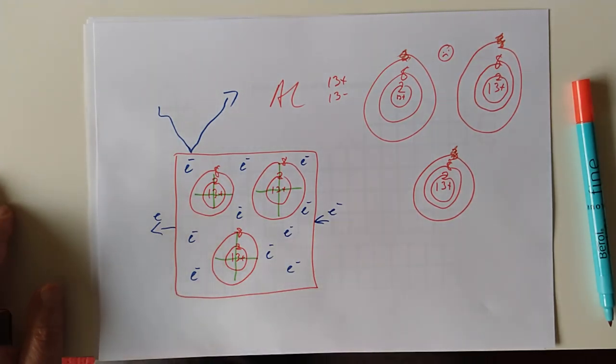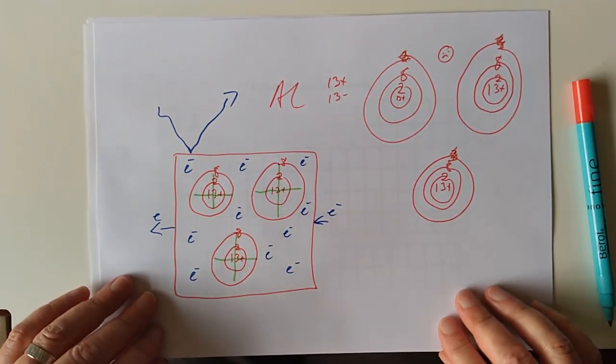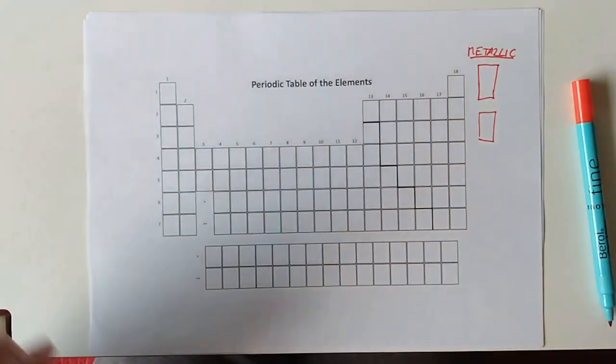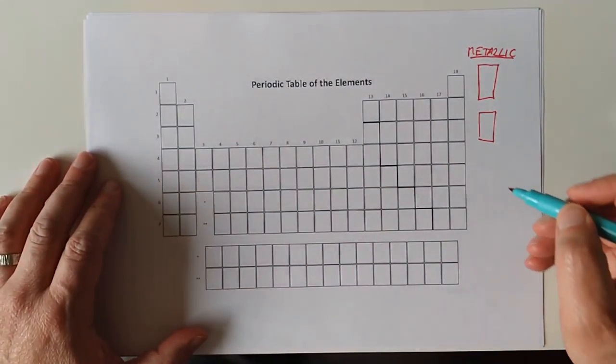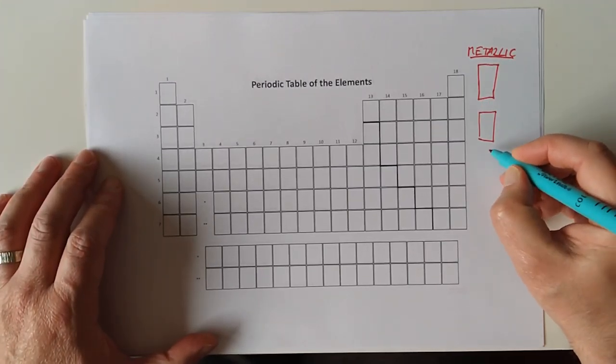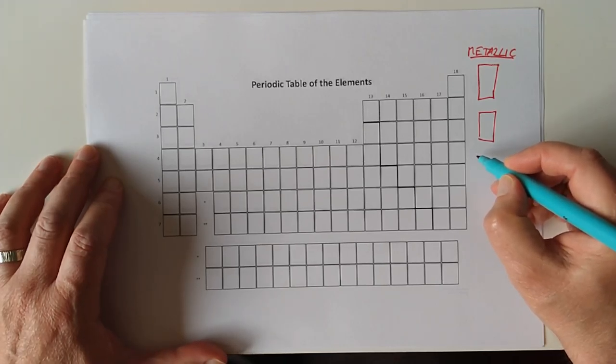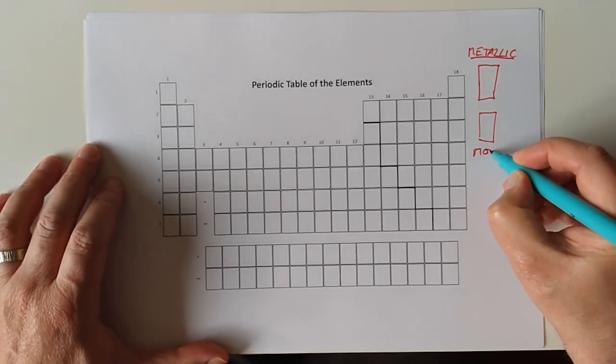That's probably all I want to say about metals, to be honest, because that's old news. Let's go to type 2. Type 2 is metallic bonding, by the way.